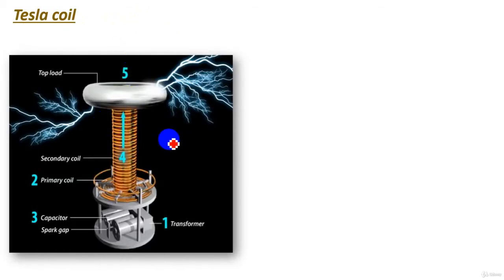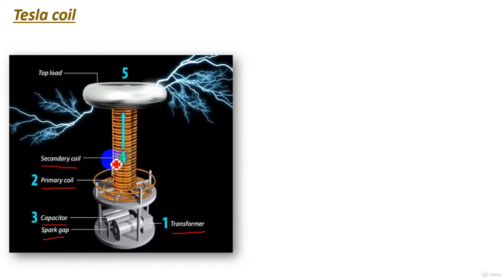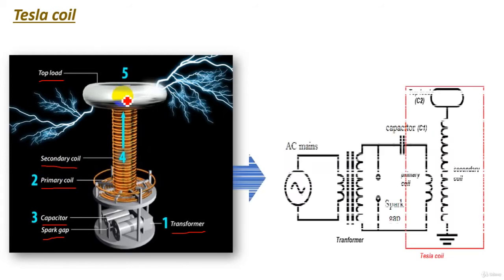The Tesla coil consists of five main parts. The first is a step-up transformer to boost the voltage to a suitable high voltage. The second is the primary coil of the Tesla coil, which has a low number of turns. We also have a capacitor connected to the primary coil, a spark gap, and a secondary coil with a large number of turns, plus a top load which acts as a capacitor with ground.